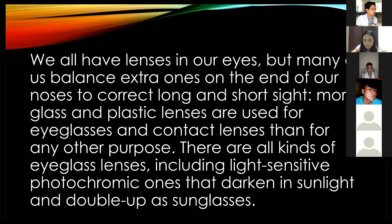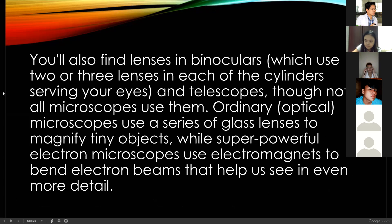You also find lenses in binoculars, which use two or three lenses in each cylinder to serve your eyes. Telescopes and optical microscopes also use a series of glass lenses. If you were to dissect a microscope, you can see a lot of lenses. I usually repair microscopes, and every time I open one I am amazed how these lenses have such magnifying power — because those are just lenses, but you can see a microscopic organism out of them. It's amazing.